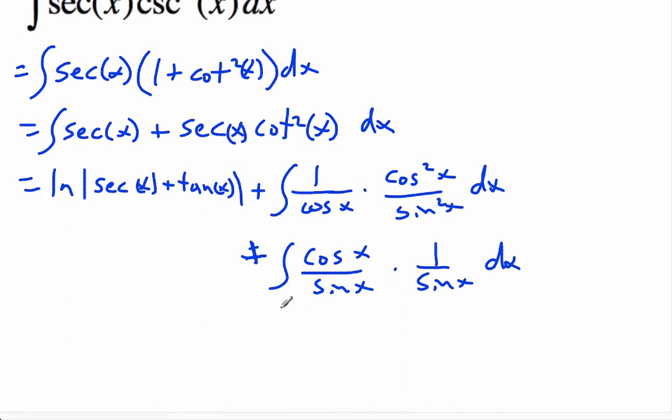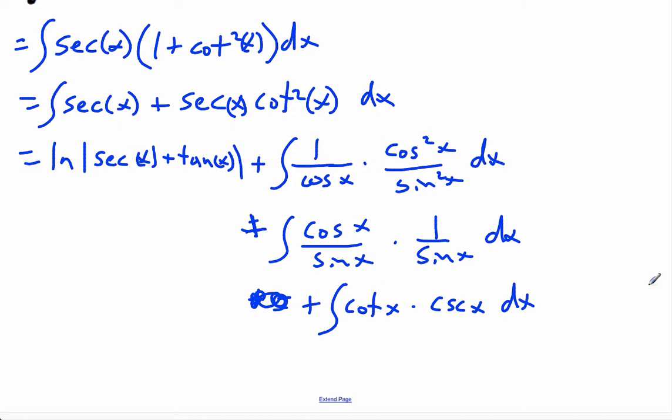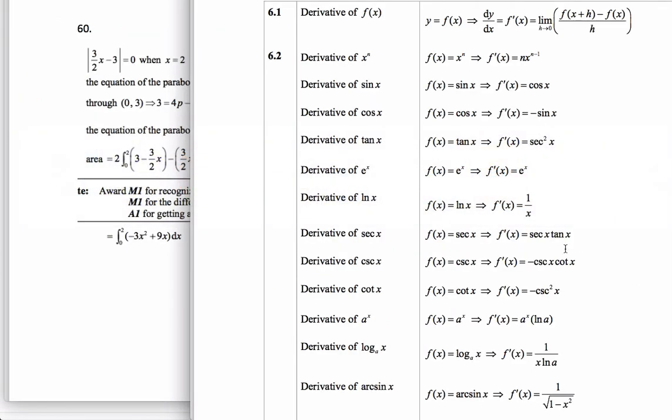That is cotangent x times cosecant x dx. Recall that's just the negative of the derivative of cosecant x.